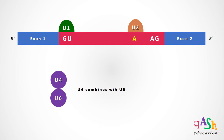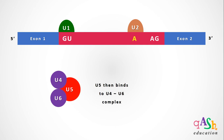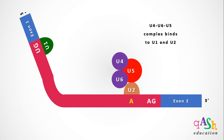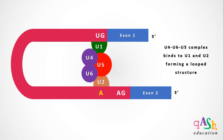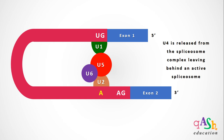This is followed by the complexing of U4 and U6, and then the two of them together complex with U5. This complex must then attach to the U2 SNRP and bring together U1 to bind to it. For this to happen, the U1 SNRP at the GU sequence along with the exon is looped back to form a loop structure. After this, U4 is released from the spliceosome complex, leaving now an active spliceosome assembly.